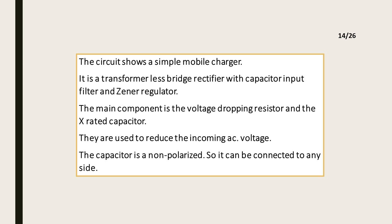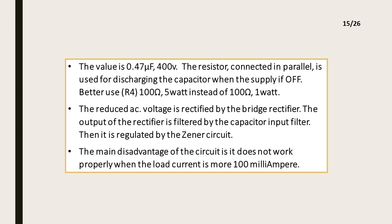The main components are the voltage dropping resistor and the X-rated capacitor, used to reduce the incoming AC voltage. The capacitor is non-polarized, so it can be connected to either side. The value is 0.47 µF, 400 volt. The resistor connected in parallel is used for discharging the capacitor when the supply is off. Better to use R4 — 100 ohm 5 watt — instead of 100 ohm 1 watt. The reduced AC voltage is rectified by the bridge rectifier. The output is filtered by the capacitor input filter, then regulated by the zener circuit.